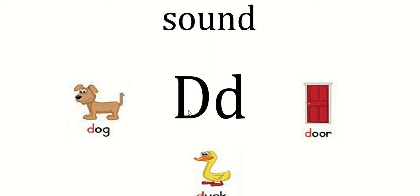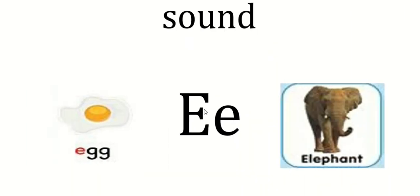D — Da — duck. And the next sound is E: E — egg, E — elephant.